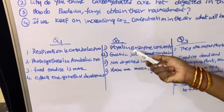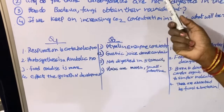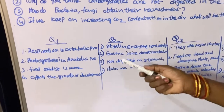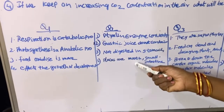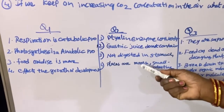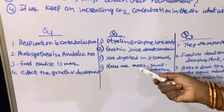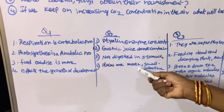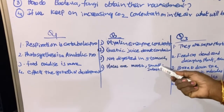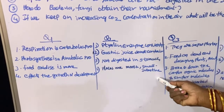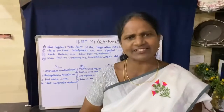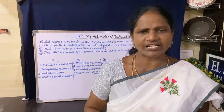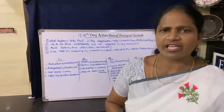The places where carbohydrates are digested are the mouth to some extent, and complete digestion takes place in the small intestine. This is the answer for the second question. Write it in a proper way.